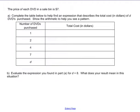The price of each DVD in a sale bin is $7. So in part A, we're going to complete the table below to find an expression that describes the total cost in dollars of D DVDs purchased. Show the arithmetic to help you see a pattern.